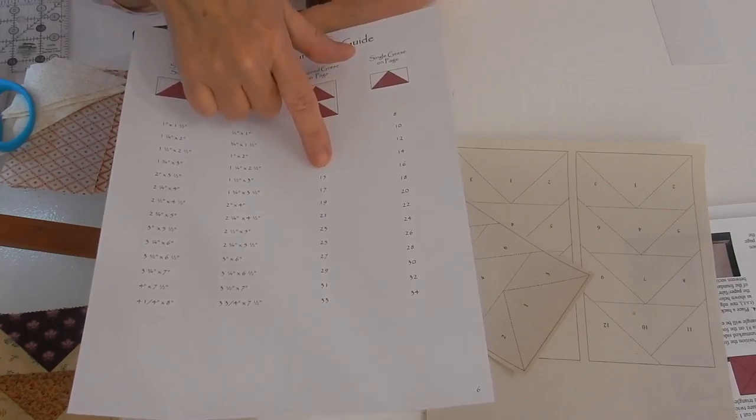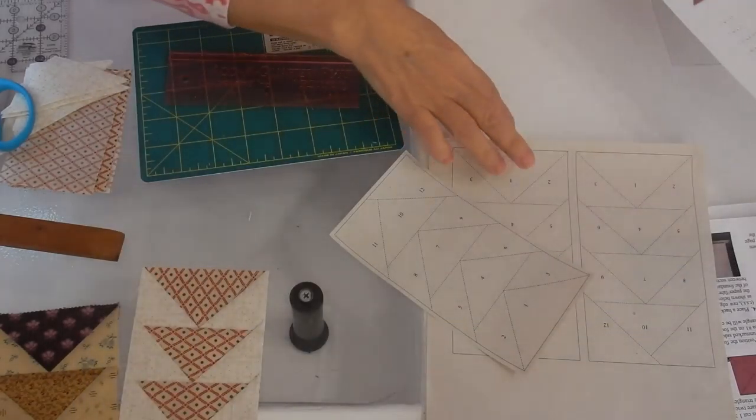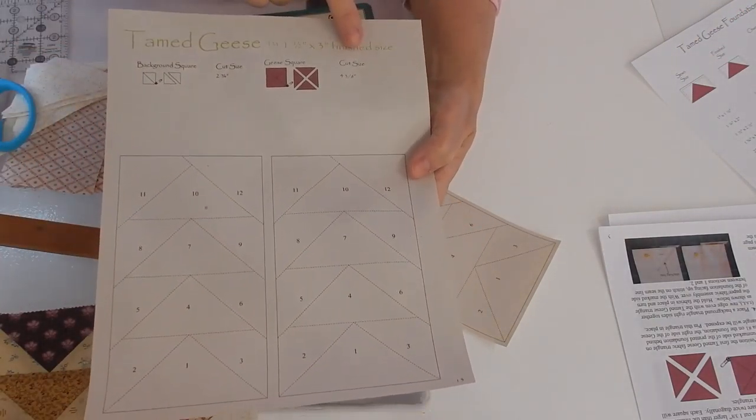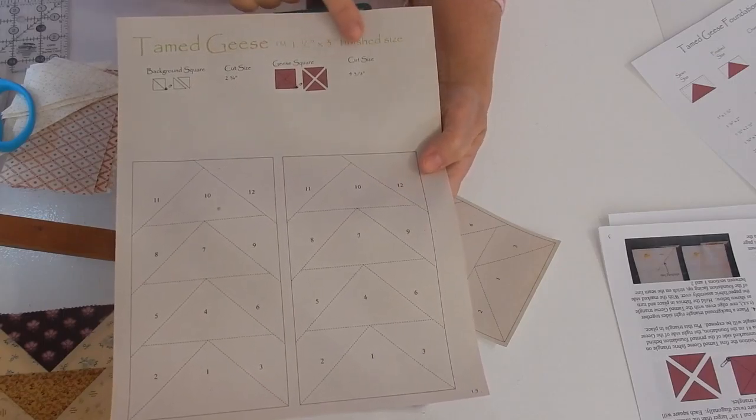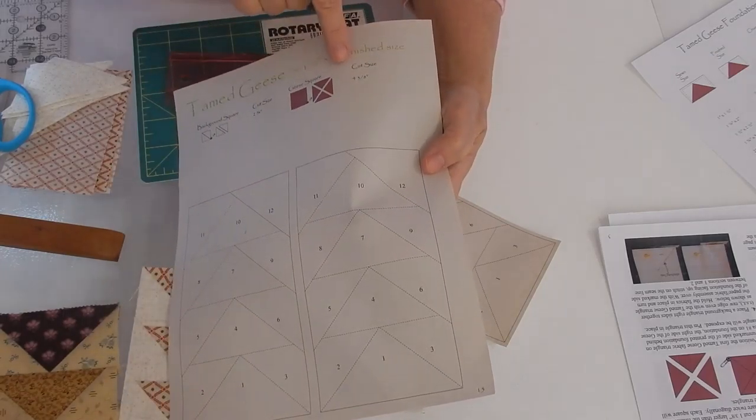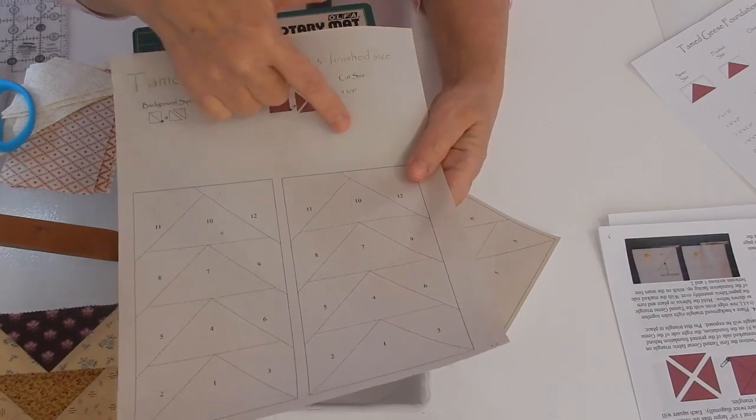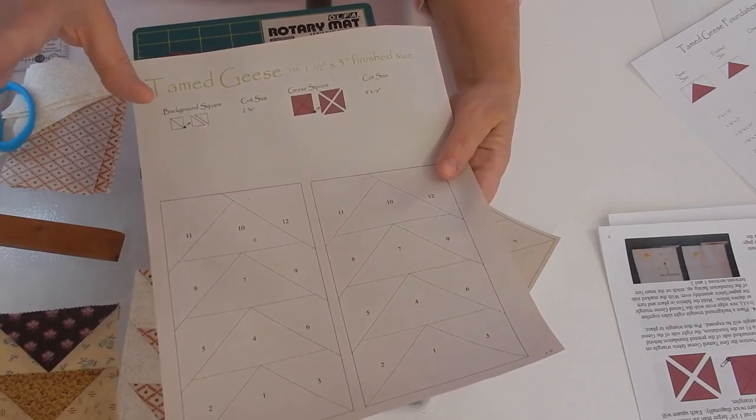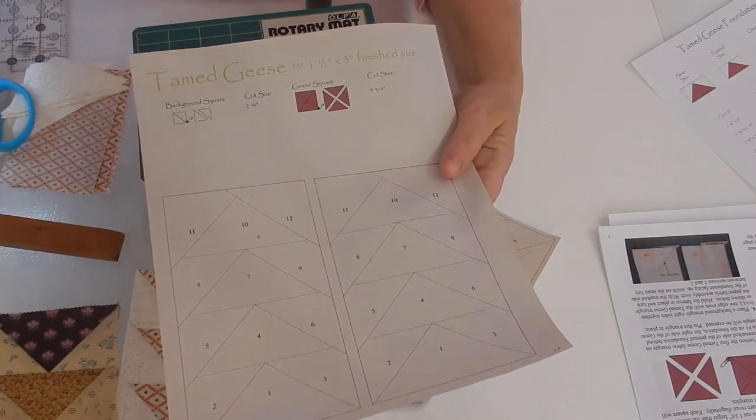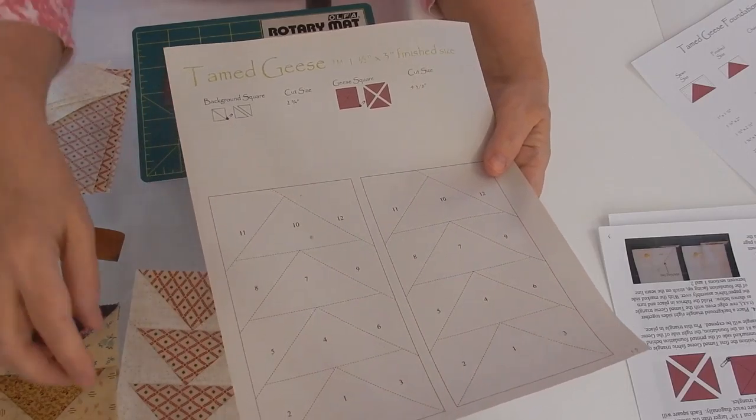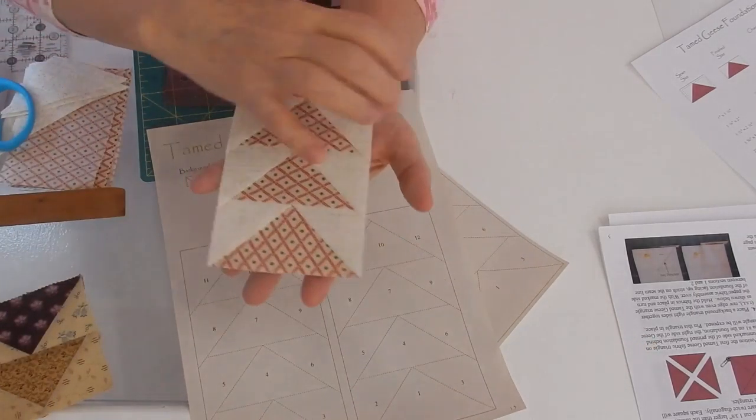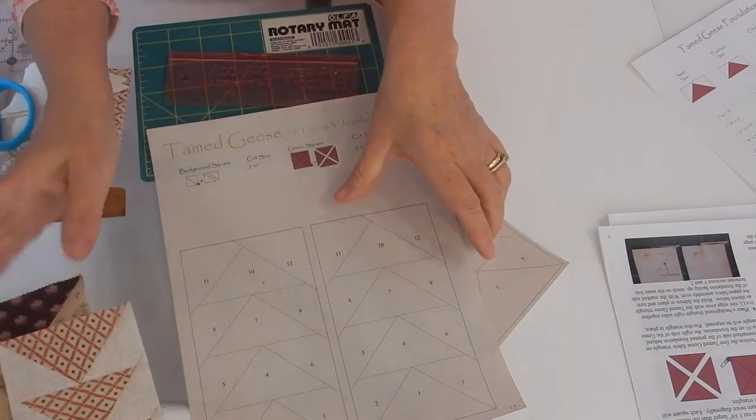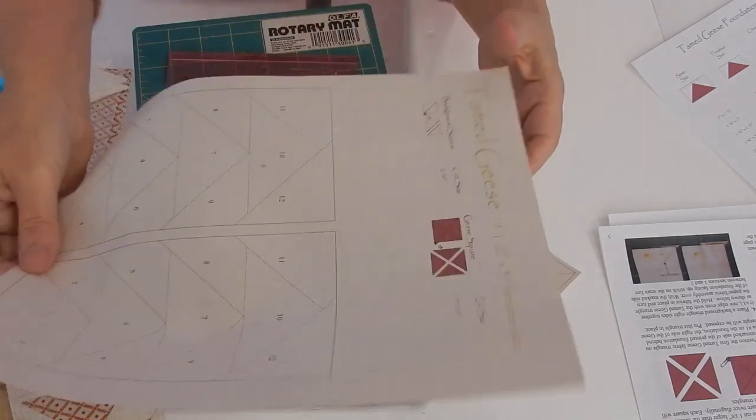I've gone and printed that out, and on here in the key it tells you what sizes to cut. On mine, I did cut them the size suggested for the geese itself, and I would suggest cutting it just a little bit larger for the feather part or the background fabric. I cut that exactly how they told me to and there wasn't a bit of problem. I'm going to now show you how to get started.